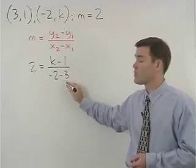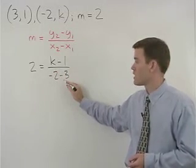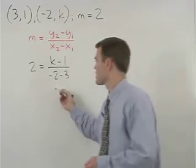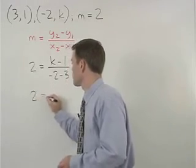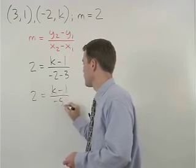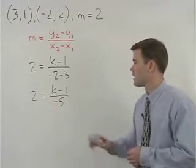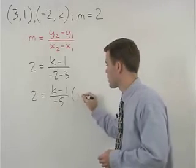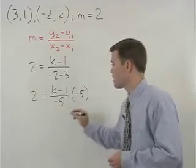Now we have an equation set up so we can solve for k. Our first step would be to simplify negative 2 minus 3 to get negative 5. So we have 2 equals k minus 1 over negative 5.